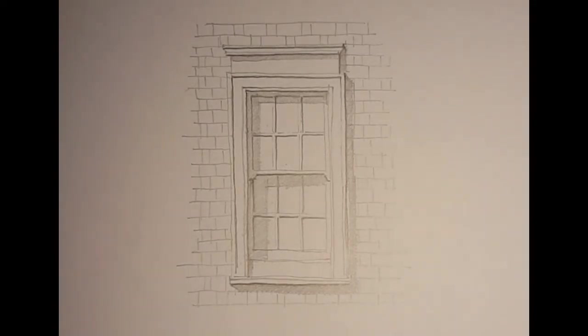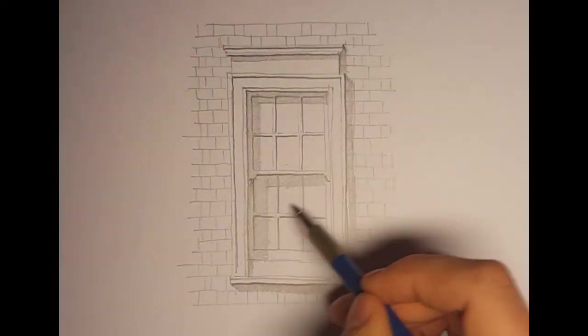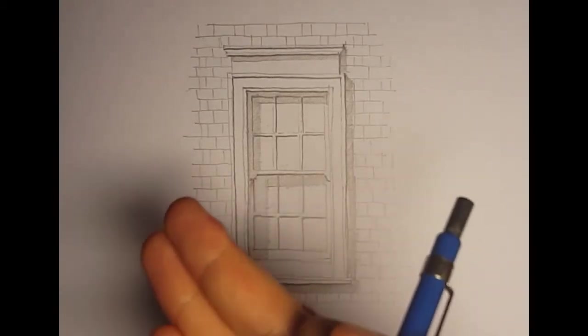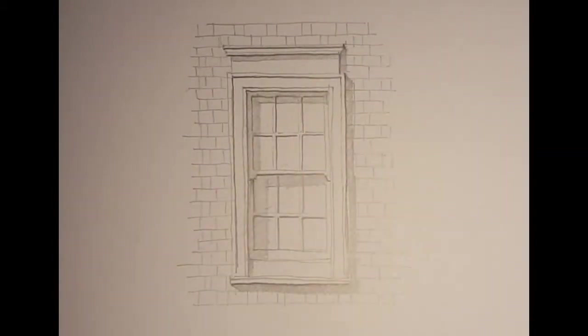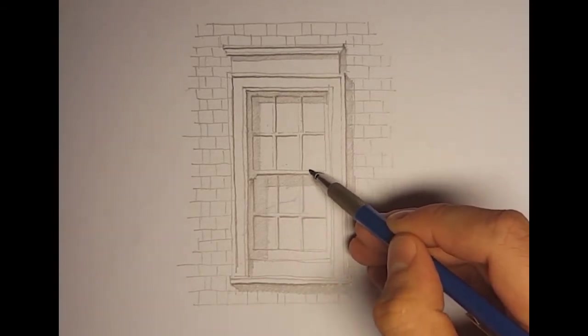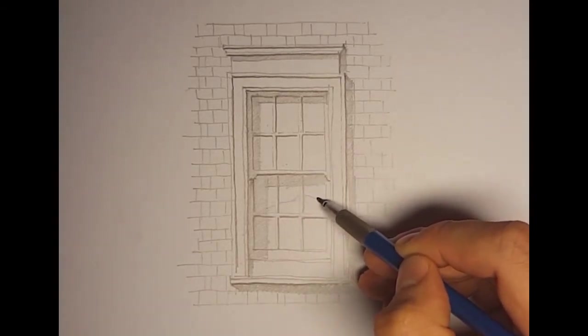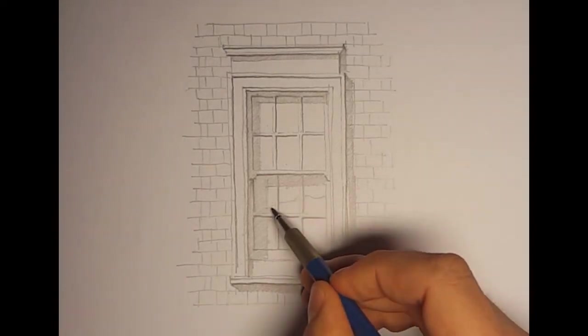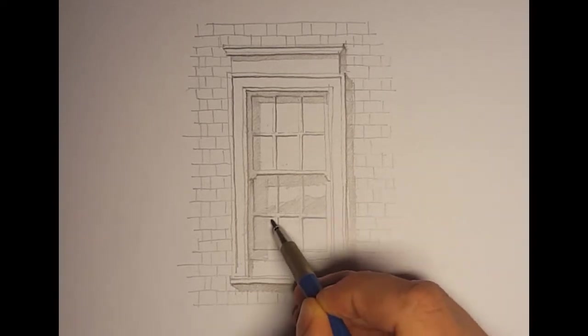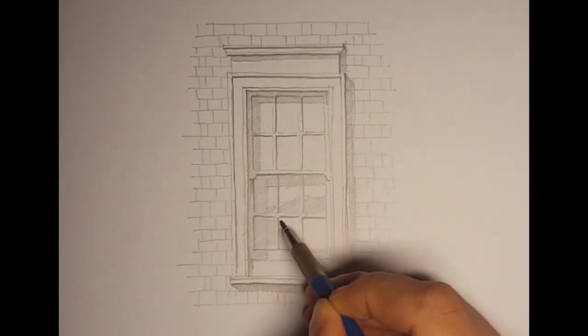The other thing is the reflection in the window. Let's imagine there's a tree in front of us and the tree is a big round shape. So I'm just going to draw random shapes like that.